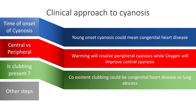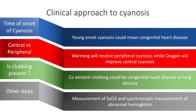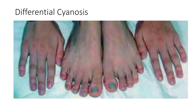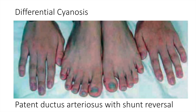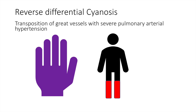Other tests such as measurement of arterial oxygen saturation or spectroscopic measurement of abnormal hemoglobin may also give us a clue to the cause of cyanosis. Differential cyanosis — cyanosis in the lower limbs but not the upper limbs — is seen due to patent ductus arteriosus with shunt reversal. Reverse differential cyanosis is where the upper limbs are cyanosed but the legs remain pink, seen in transposition of great vessels with severe pulmonary arterial hypertension.